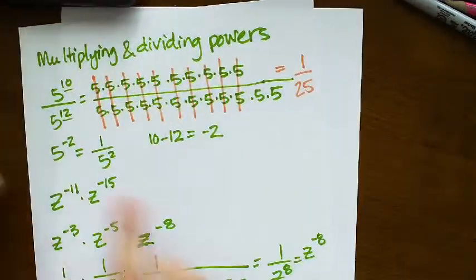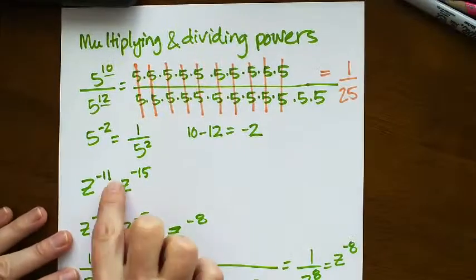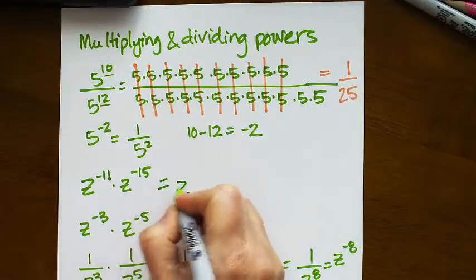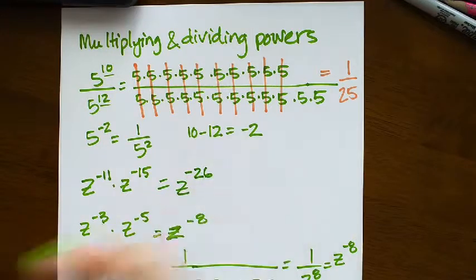Negative 26. So for this example, you would add negative 11 and negative 15 and that would be z to the negative 26.